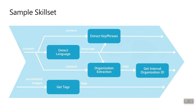This is an example of a sample skill set. Let's say you have some content here — text files, for example — and you can detect the language, extract key phrases using language information, and extract the organization. You can also have an additional skill to get an internal organization ID. And for images, you can apply vision APIs to detect what's in the image and add additional tags for the image.